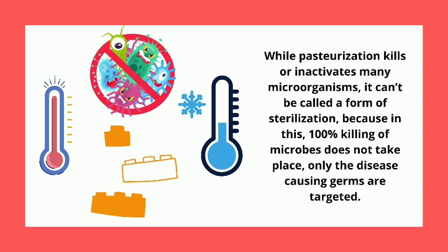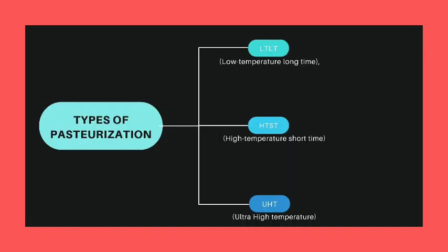Now let's know about the types of pasteurization. There are 3 types of pasteurization methods used. First is LTLT, which is low temperature long time. Second is HTST, which stands for high temperature short time. And the third one is UHT, which is ultra high temperature.